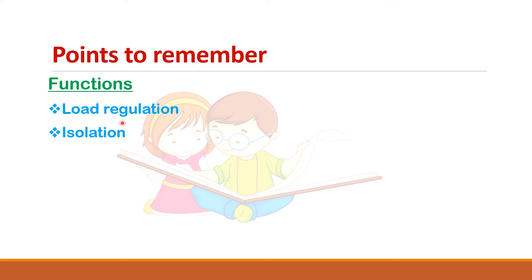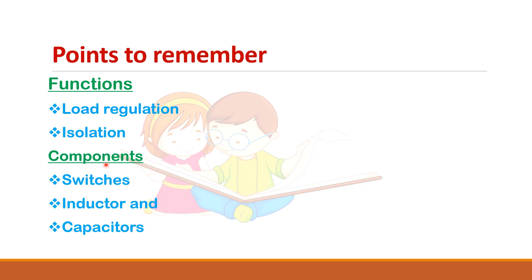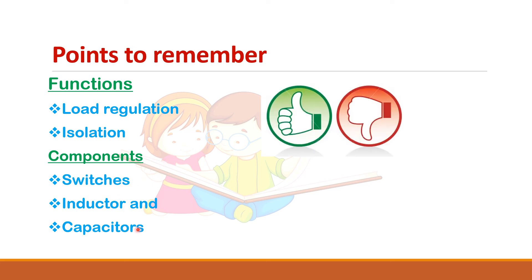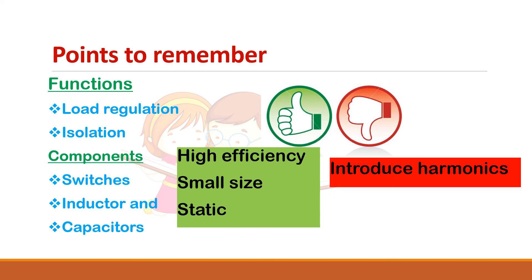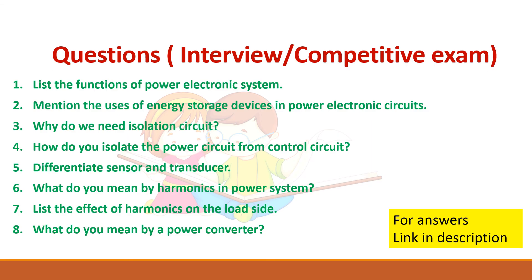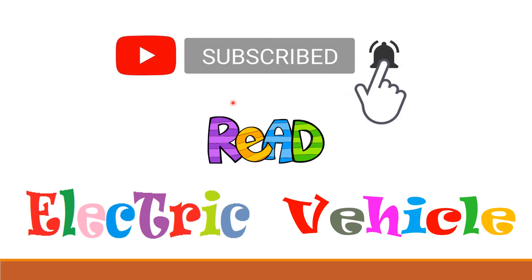To summarize: the function of a power electronic system is to regulate the load and provide isolation. The main components in power electronic converters are switches, inductors, and capacitors. The advantages are high efficiency, small size, and they are static. The disadvantage is that they introduce harmonics into the system. These are some interview questions you can prepare — answers are linked in the description. Thank you for watching; if you like it, do subscribe to Reed Electric Vehicle.